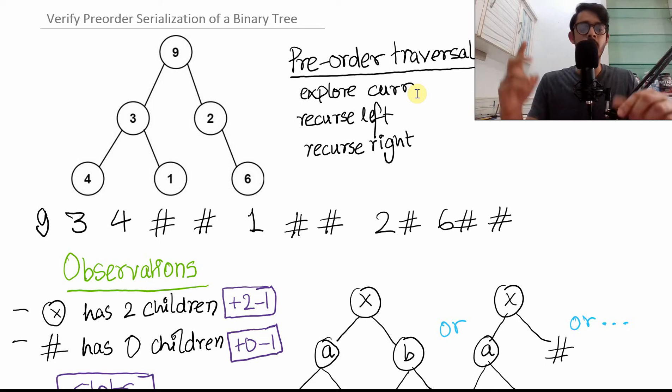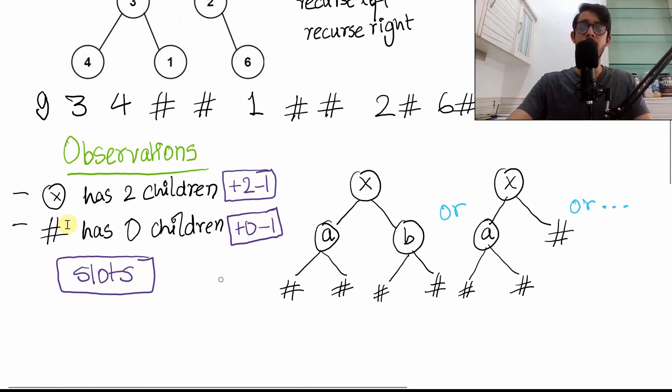For each valid node, we're going to have two more spaces like this. Similarly for an invalid node, which produces zero children, we are going to have zero more slots available. Now these spaces and slots are equivalent, basically saying that I have two more slots available to be filled in by the children. Each valid node produces two. Each invalid node produces zero.